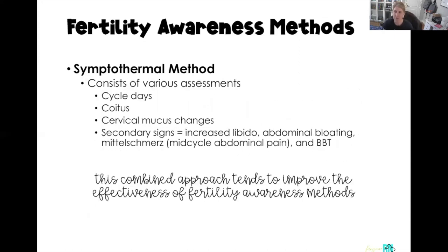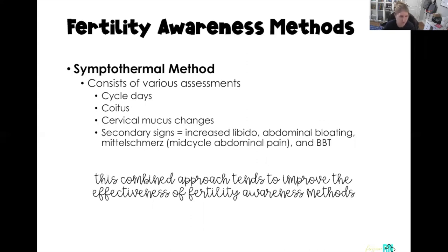The symptothermal method combines all of these approaches and is actually the most reliable. Women use basal body temperature, cervical mucus changes, and cycle day tracking together. They also watch for signs like increased libido during fertility, abdominal bloating, or mittelschmerz — mid-cycle abdominal pain around the time of ovulation. When we use all the methods combined, we tend to get the best results.